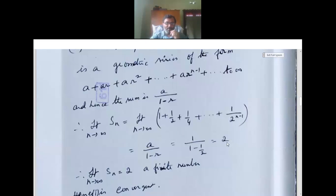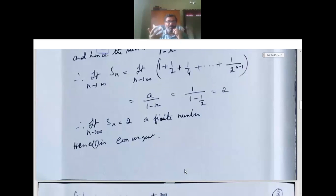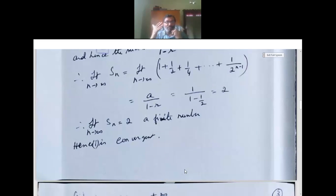So limit n tends to infinity Sn is 2, and 2 is a finite number. Hence, the given series is convergent.